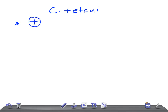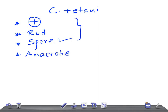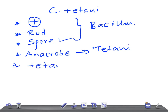Clostridium tetani is a gram positive rod, or bacilli. It is a spore-forming bacteria — yes, it forms spores. Whether it's aerobic or anaerobic: it's anaerobic. That's really important. The Bacillus series bacteria are aerobes, but tetani is anaerobic. And they produce an important toxin known as tetanus toxin.